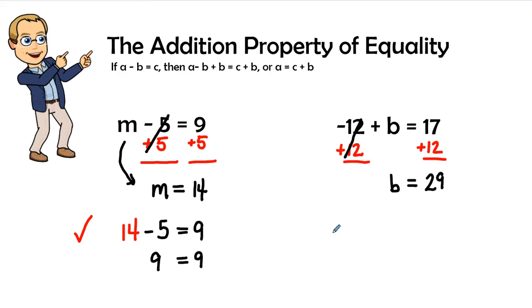And 14 minus 5 is 9, and since 9 equals 9, we know that that is going to check out. Now let's go ahead and see our second problem and see if that checks out. So wherever I see b, I see my negative 12 plus I'm going to add 29.